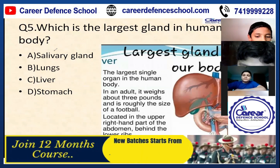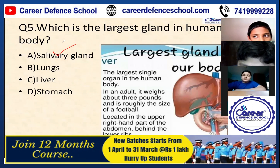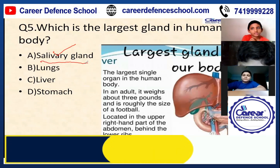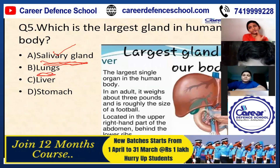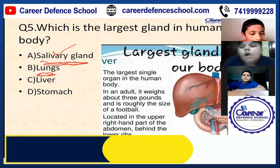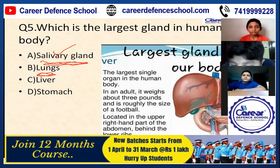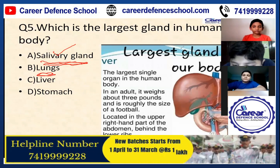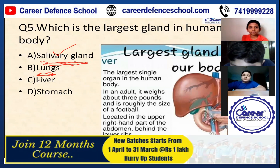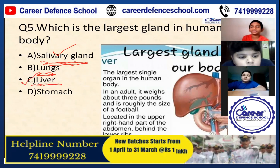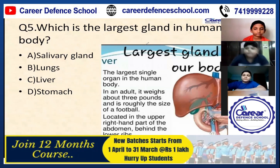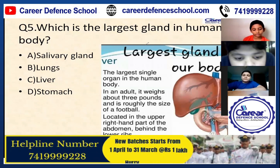Learn it — the liver weighs three pounds. Salivary glands are those glands which secrete saliva in your mouth. What is the function of lungs? Purification of air — very good. It helps in breathing, and the exchange of oxygen and carbon dioxide. So the largest gland in the human body is the liver, and the largest external gland is the skin.